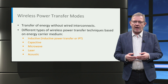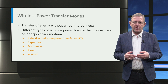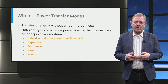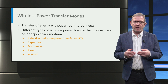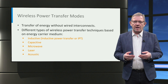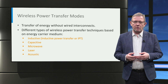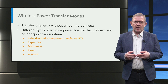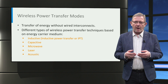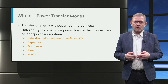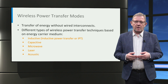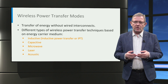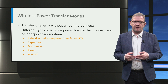Inductive power transfer, or IPT, is a form of wireless power transfer that relies on high-frequency magnetic fields. Typically, applications use frequencies ranging from kilohertz to megahertz, and power levels can range from microwatts to hundreds of kilowatts. The power transfer efficiencies can be in a range of 75 to 92 percent.